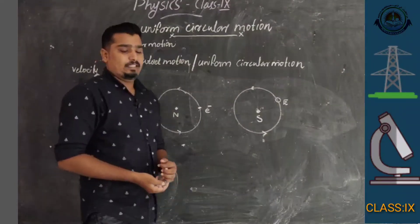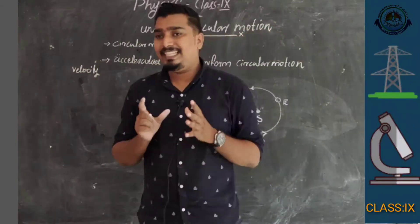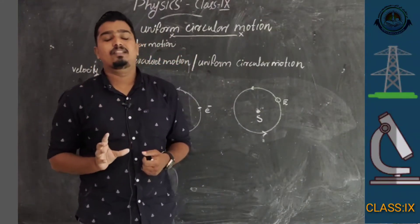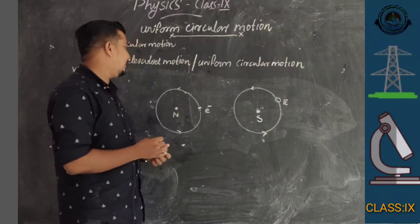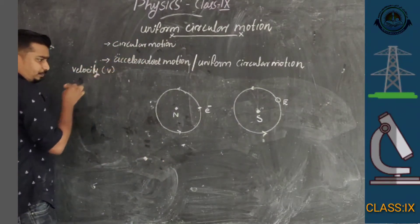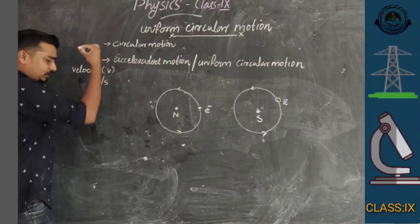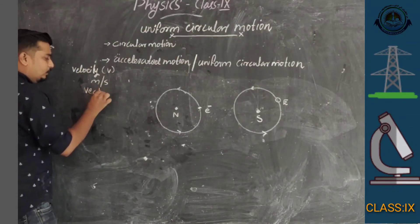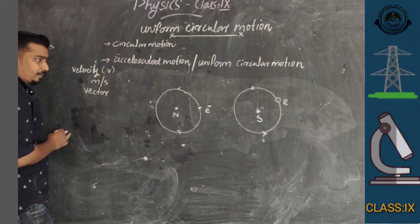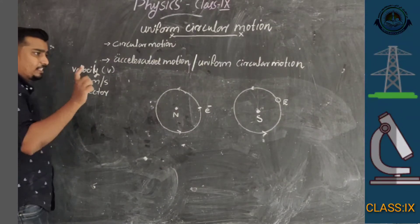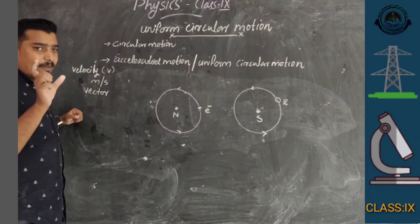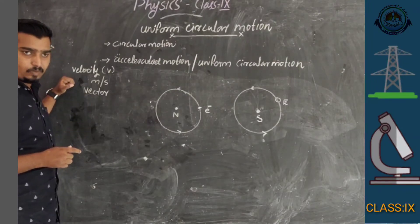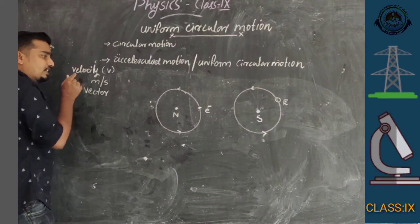Before defining uniform circular motion, what is velocity? Velocity is speed along with a direction. Speed along with a direction is called velocity. The unit of velocity is meters per second. Velocity is a vector quantity — a quantity that has both magnitude and direction.